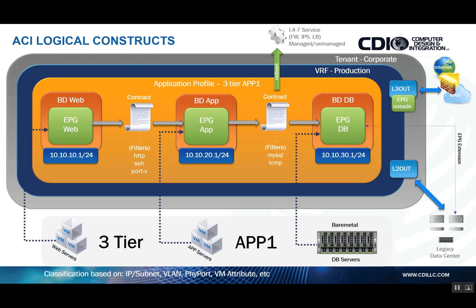If you have a legacy data center or switching environment that you need to connect to for migration reasons or for extending to a separate firewall or router, you can achieve this in two different ways: one being an EPG extension, and the other through something called a layer two out. In my experience, I've primarily used EPG extensions as a form of connecting external devices and networks. Layer two out is really only viable when you need to apply a contract to the external layer two device — so there are different use cases, but EPG extensions are used more often.